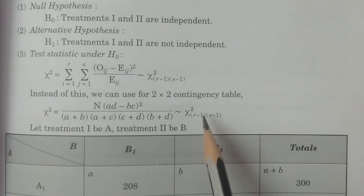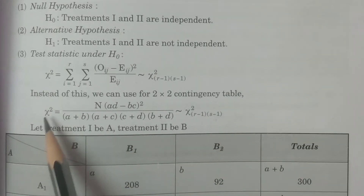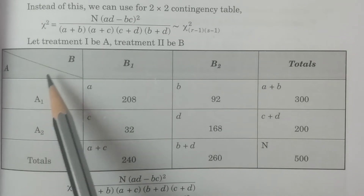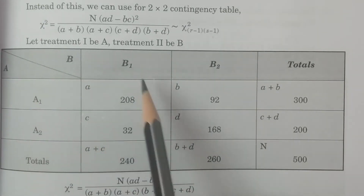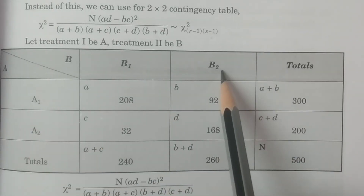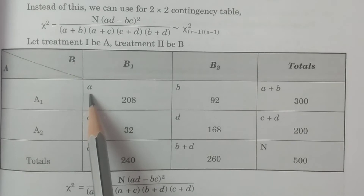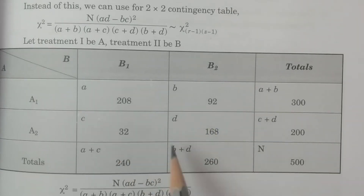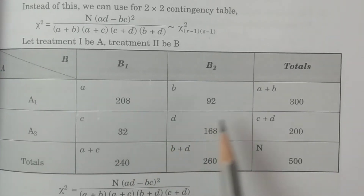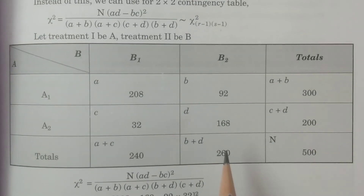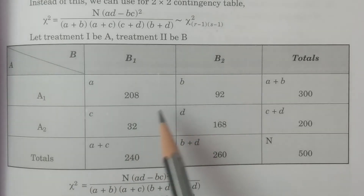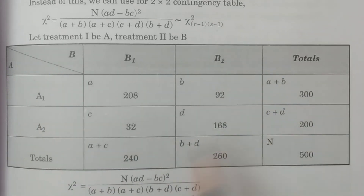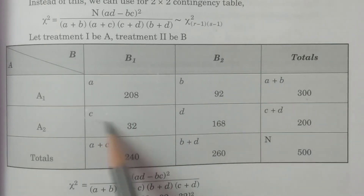Now observe: we arrange the given data into the two-by-two contingency table form with categories A1, A2 and B1, B2. Let a=208, b=92, c=32, d=168. The row totals are a+b and c+d, and the column totals are a+c and b+d.